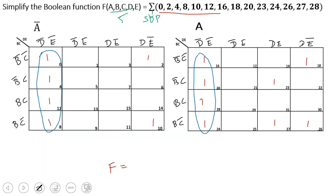Now we will form an octet group in the K-map. In an octet, we eliminate three variables. If a variable appears in both its original and complement form within the group, it is eliminated. The remaining variables that are common throughout the group are written in the final expression. Looking at the octet formed, the first K-map has A-bar and the second has A, so A is eliminated. Similarly, B and C are checked — if both complemented and uncomplemented forms appear, they are eliminated. The remaining common variables are D-bar and E-bar.